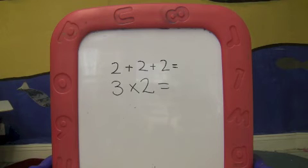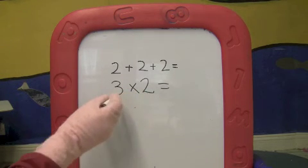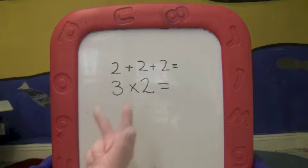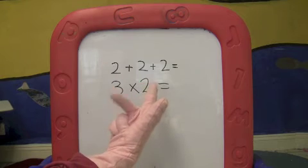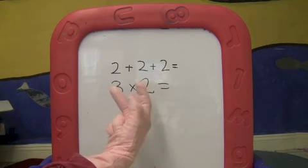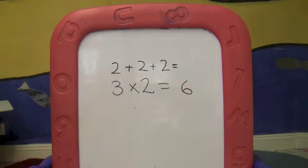And to work out the answer, I'm going to count in 2s 3 times. There's 3 fingers, 2, 4, 6. So 3 lots of 2 is 6.